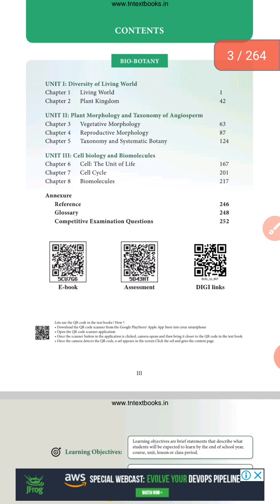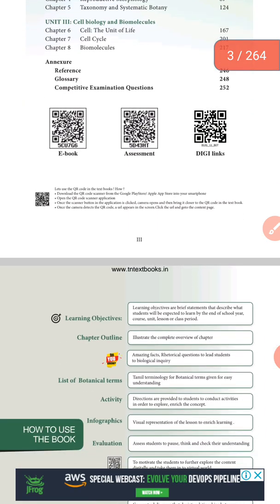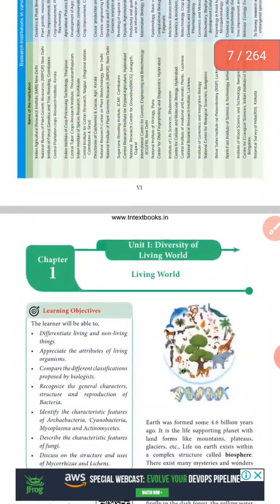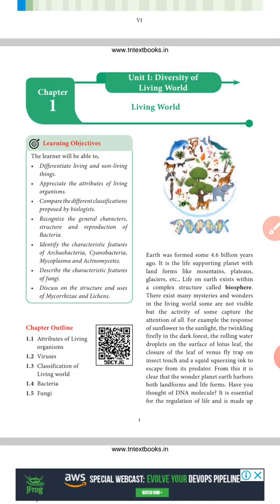This is the first unit of the living world. The first topic is the diversity of the living world for 11th standard students. The kingdom of the entire world — the earth — consists of both living and non-living things. Living things and non-living things are both attributes of our diversity of the world.